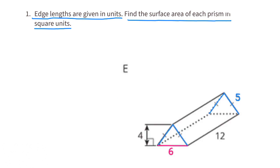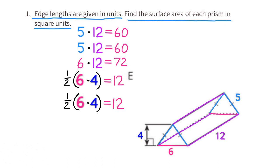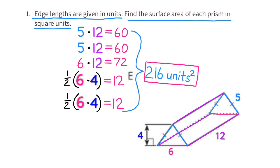Prism E. This prism has two sides that are 5 by 12, one side that is 6 by 12, and two triangular bases each with a base of 6 units and a height of 4 units. Adding up all of these surface areas, the total surface area for Prism E is 216 square units.